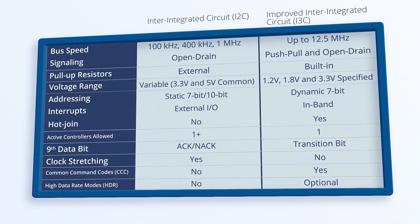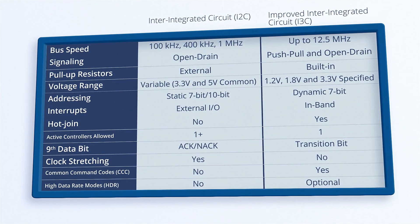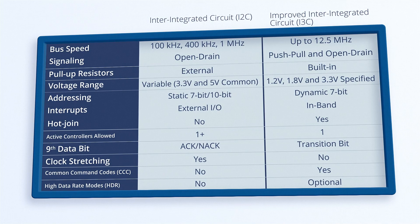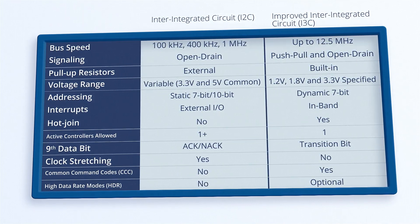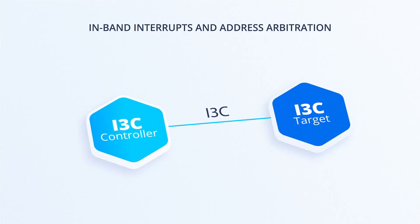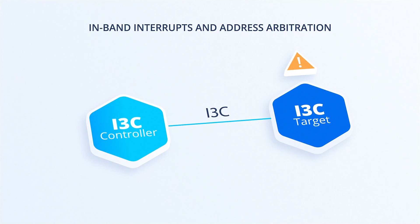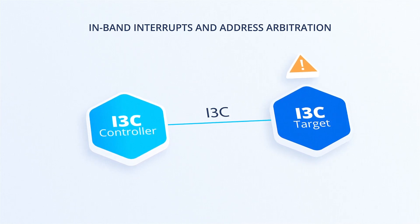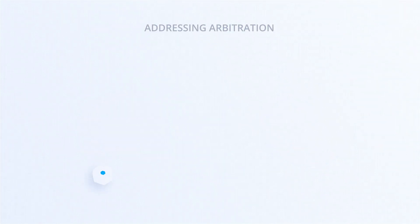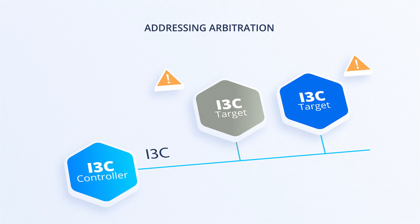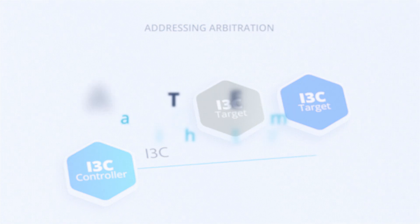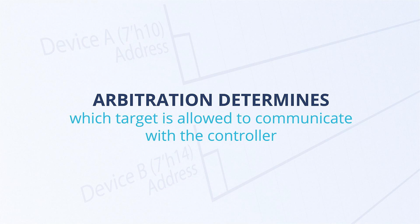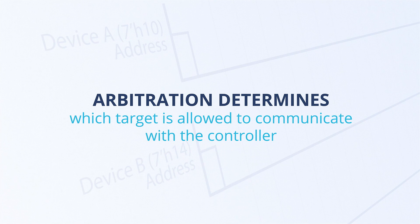HDR is not required for basic i3C communication. Devices that do not support HDR ignore communication until they detect the HDR exit pattern. Finally, let's discuss in-band interrupts and address arbitration. Unlike i2C, targets can generate the start condition for in-band interrupts; however, targets do not have control of the clock. The active controller must detect the start condition from the target and then provide a clock signal. If two targets attempt to communicate at the same time, addressing arbitration will occur, which determines which target is allowed to communicate with the controller.